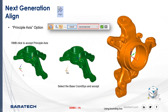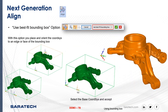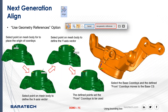You can see here as I'm changing my axis system from the 'from' to the 'to' — where it was originally and where I want to move it to. We also have the best fit bounding box option, showing how it fits within our axis system, and the custom box option using our geometry reference.